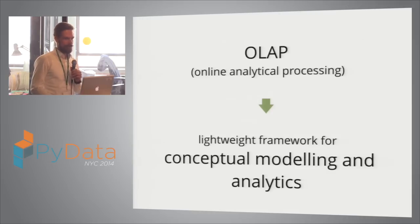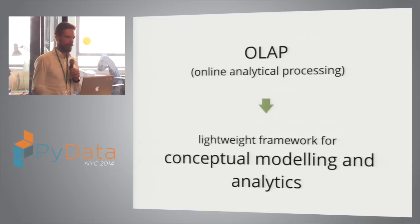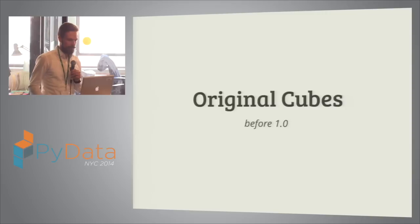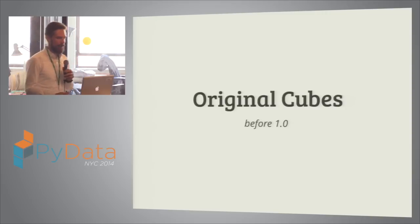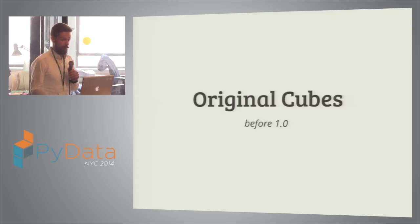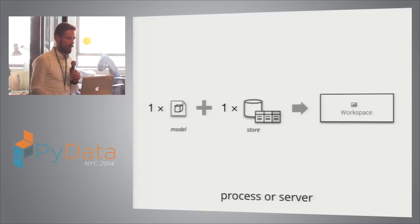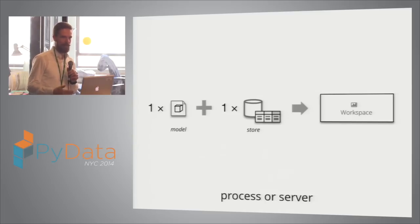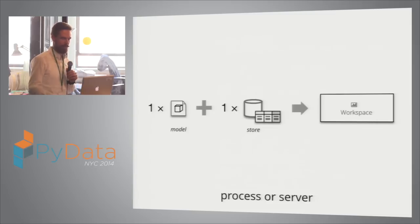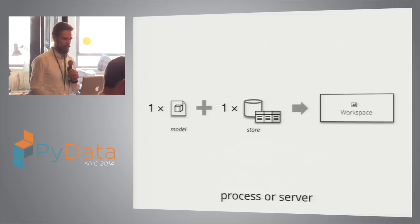It started as an OLAP framework. I rather call it a conceptual modeling and analytics framework. The original Cubes before 1.0 — which was released in September — was a really simple framework that had just one model, one data store, one database, and one workspace per process or per server. So if you wanted multiple databases, you had to launch multiple servers or multiple processes to access all those different databases, and you would have to fit everything into one model.